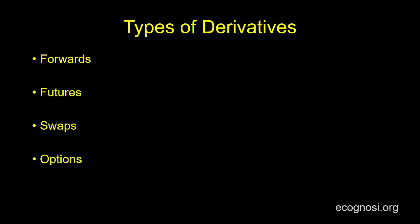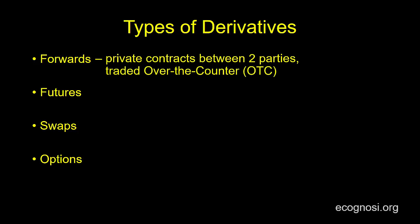Their main difference is that forwards are private contracts between two parties. They trade in what is called the over-the-counter market, commonly known by its initials as OTC. To give you an idea, imagine a trader working for JP Morgan Chase who wants to buy 300 ounces of gold in 3 months time for $1,000 per ounce. Also imagine a trader working for Citigroup who is willing to sell that quantity of gold at the same price in 3 months. So if the two were to bind themselves in a contract — with the JP Morgan trader agreeing to buy and the Citigroup trader agreeing to sell — then that contract would be an example of a forward contract.